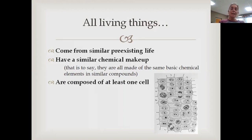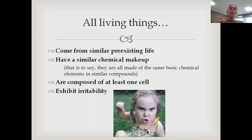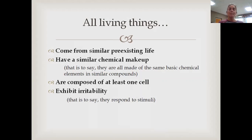All living things are composed of at least one cell — in 7th grade we said 'are made of at least one cell,' which is obviously the same thing. Looking at those cells in the picture, I bet you could tell me they're undergoing mitosis, and even identify the different phases. All living things exhibit irritability — and by that we don't mean they're angry, like that child in the picture. We just mean that they respond to stimuli, or as we said in 7th grade, respond to their environment.